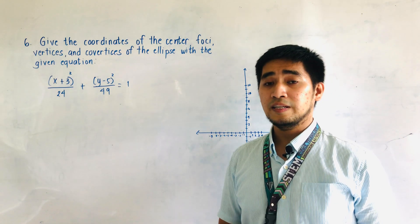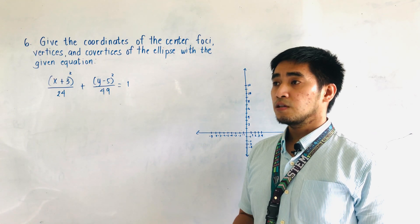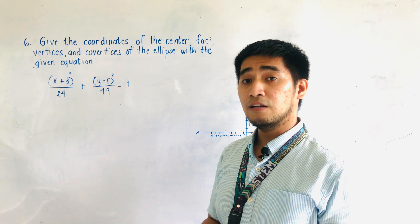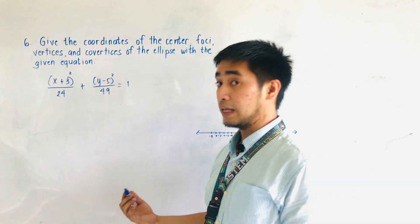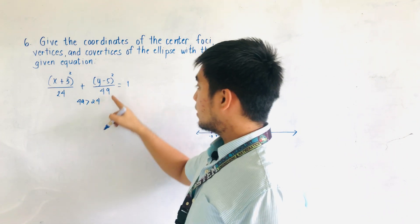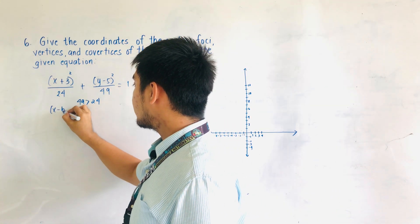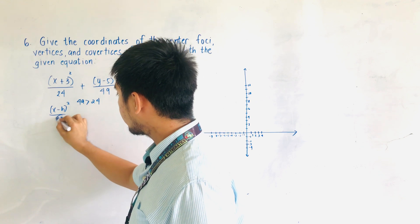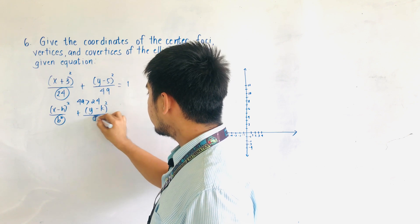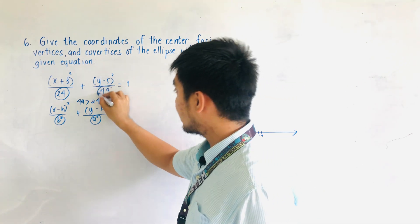This is an equation of an ellipse because the right side is equal to 1. Let us first determine if the major axis is vertical or horizontal. Based on the given denominators, 49 is greater than 24 and it is with y. Therefore, it takes the form x minus h, quantity squared, over b squared, plus y minus k, quantity squared, over a squared, where a squared is the largest value — that is 49.